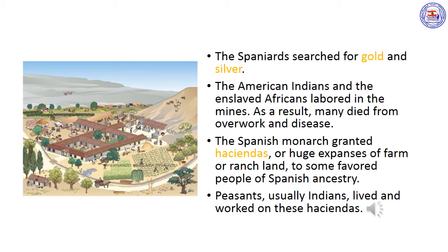In addition, the Spaniards wanted to find gold and silver in Mexico. American Indians and enslaved Africans did most of the hard physical labor in the mines. As a result, many died from disease and overwork. Like mining, agriculture became an important part of the colonial economy. After the conquest, the Spanish monarch granted haciendas — huge expanses of farm or ranch land — to some favored people of Spanish ancestry. Peasants, usually Indians, lived and worked on these haciendas. The haciendas made their owners very wealthy.